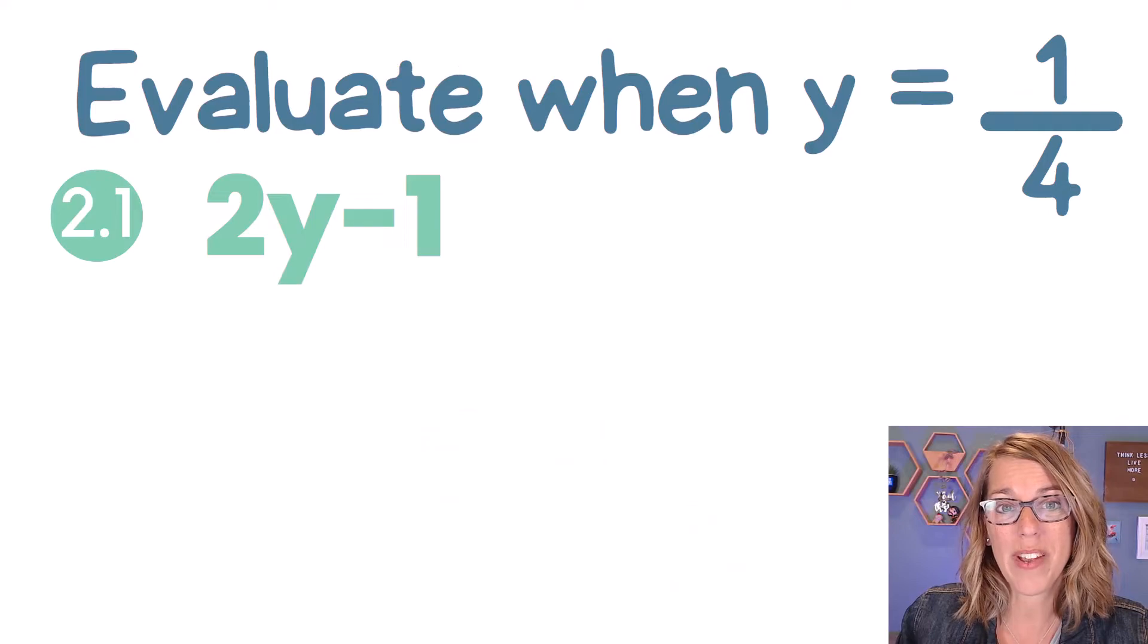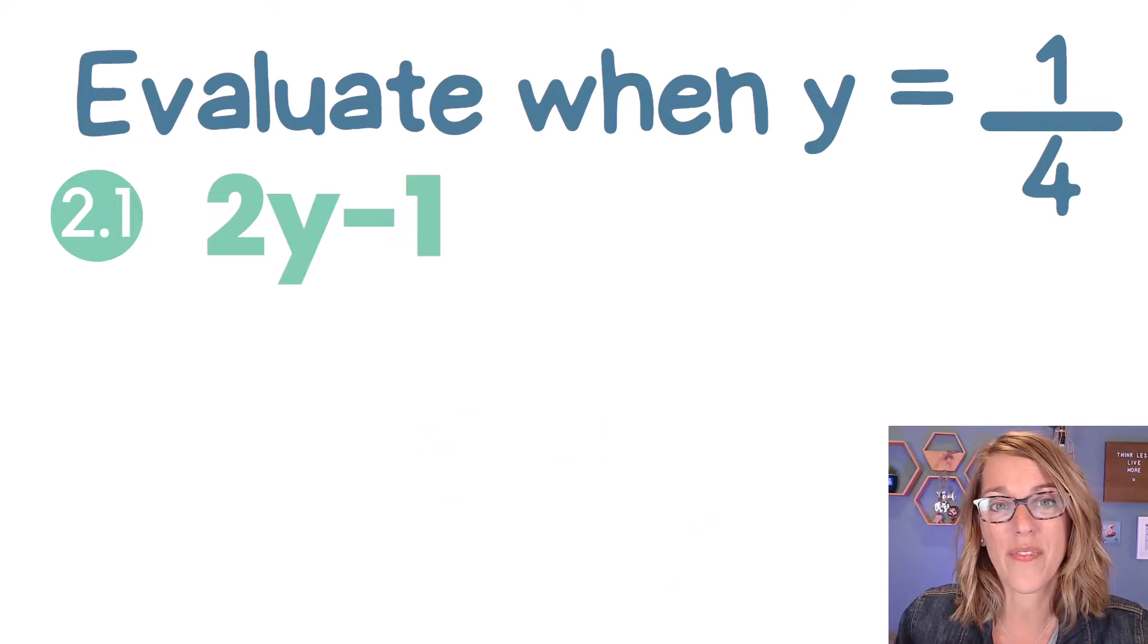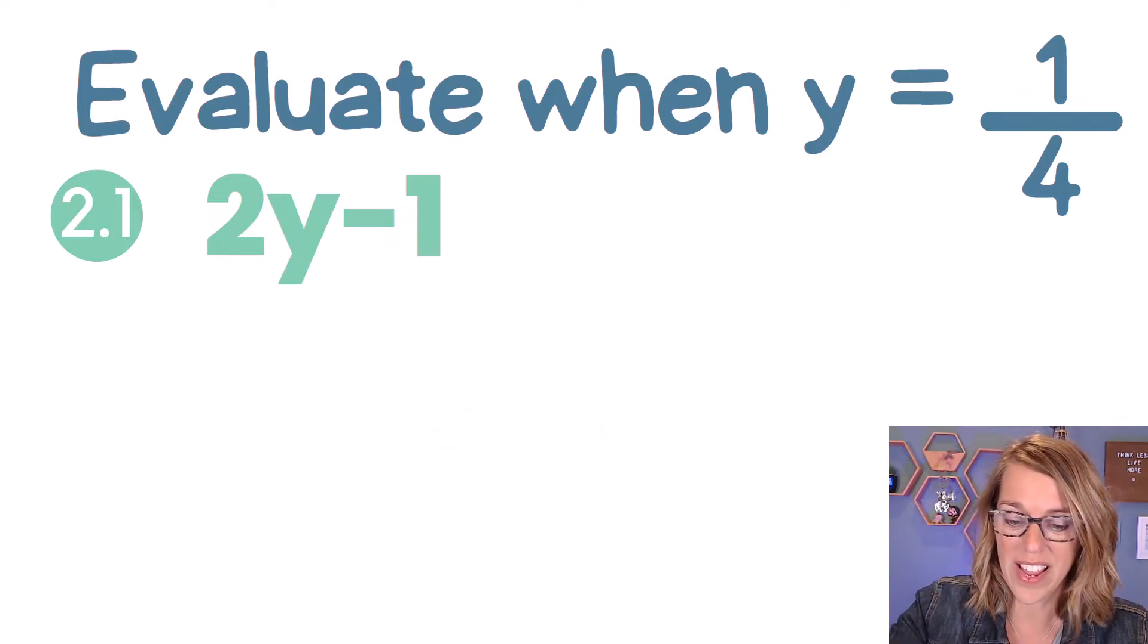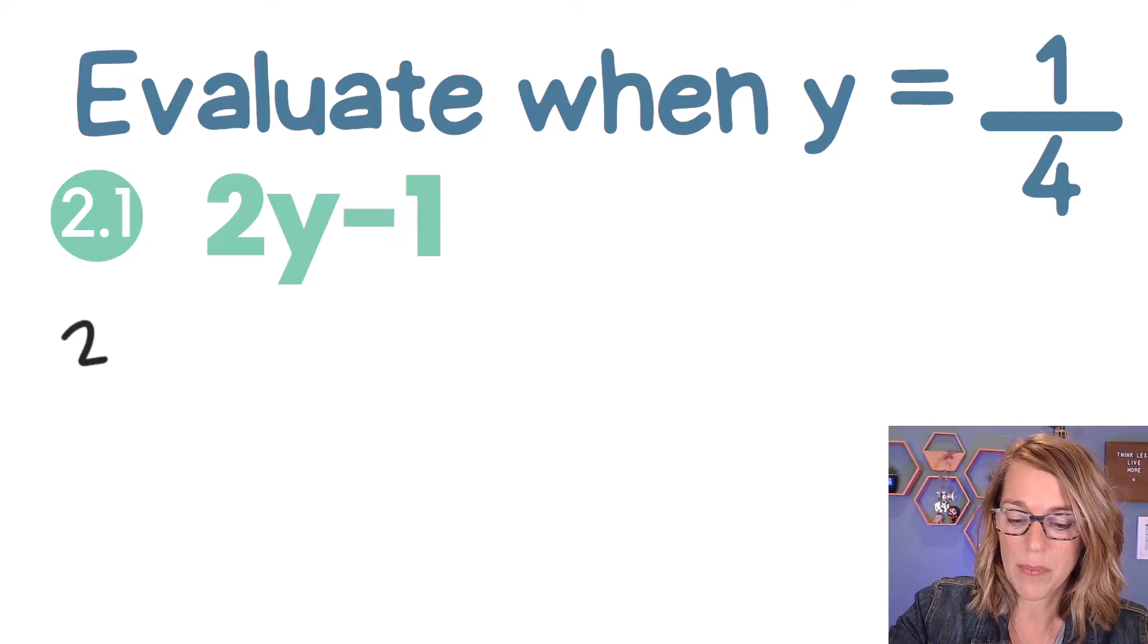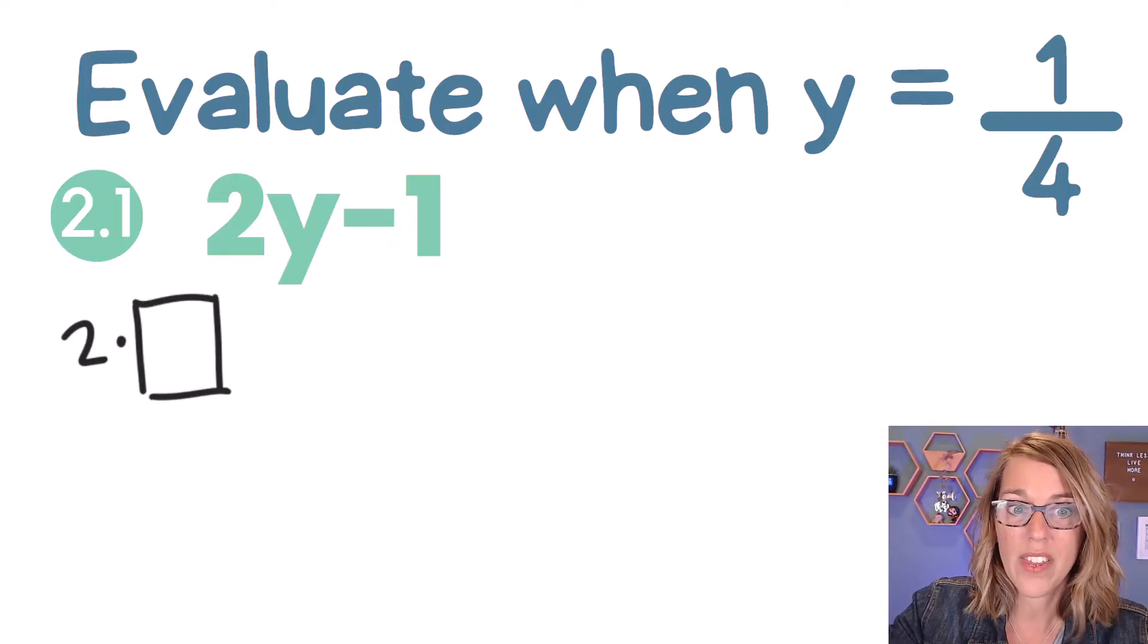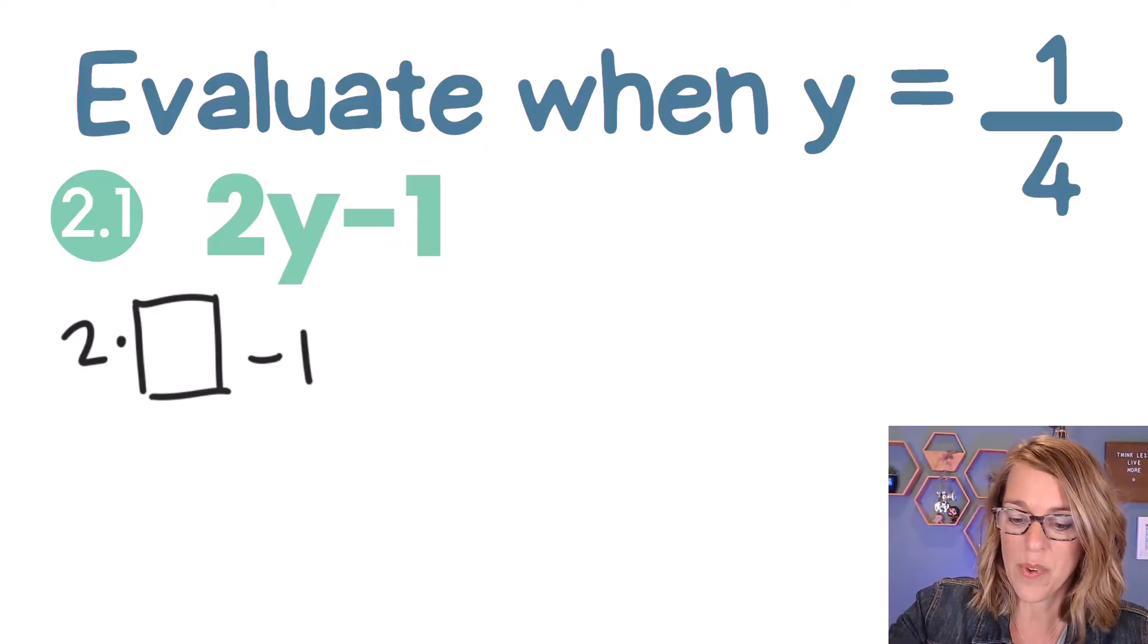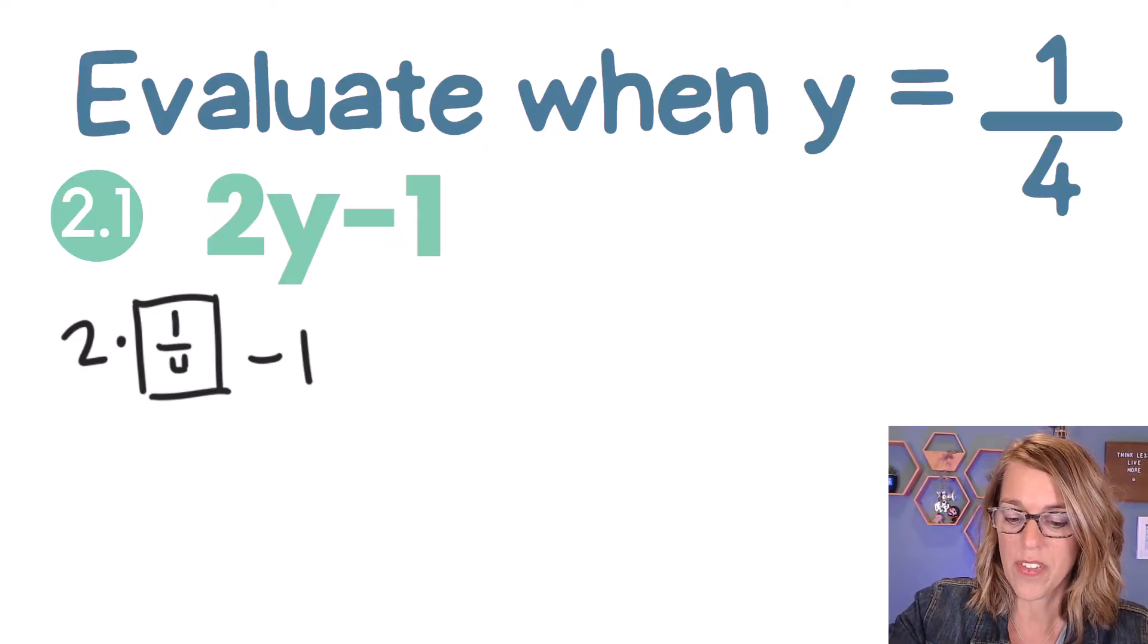Let's redo 2y minus 1, but this time with a fraction for the value of y. So I still have 2 times my y, so I'm going to go ahead and write a box in for where I put my y, and then minus the 1. Now y is equal to a 1/4, so I'm going to put my 1/4 there.